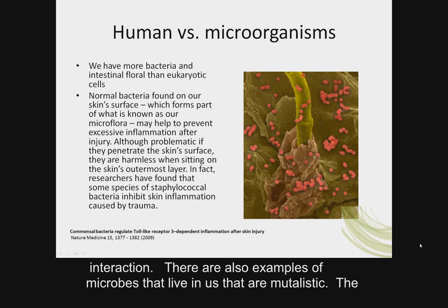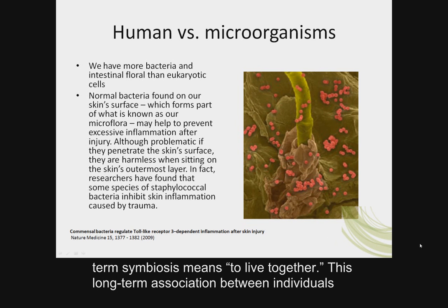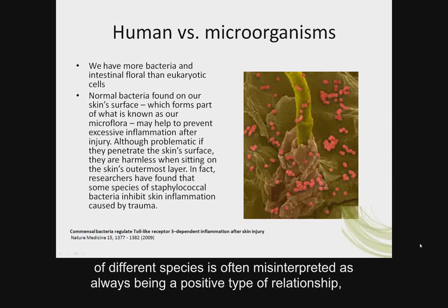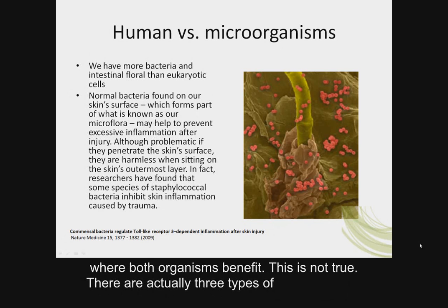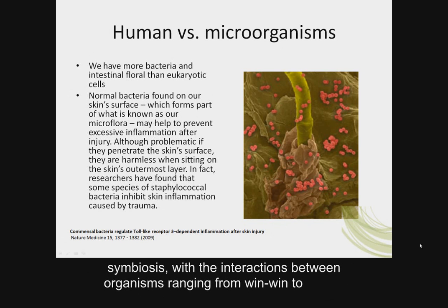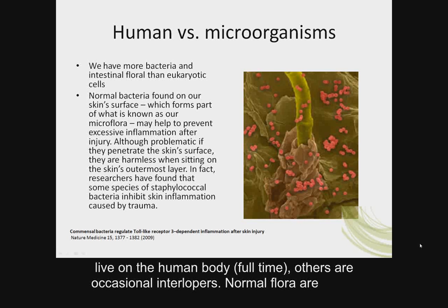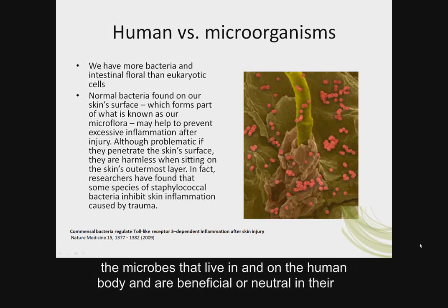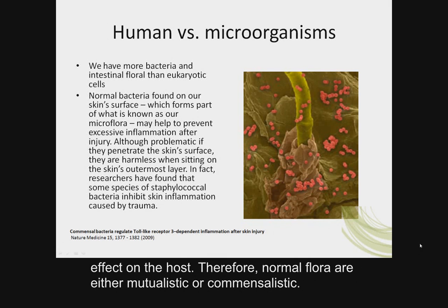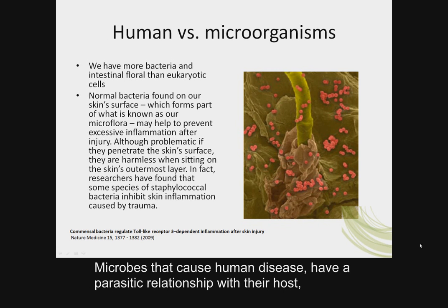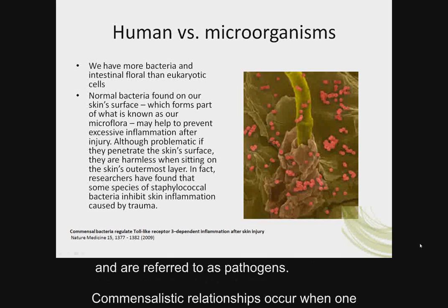The term mutualism is applied to an interaction in which the microorganism and the host both derive benefits. The term symbiosis means to live together. This long-term association between individuals of different species is often misinterpreted as always being a positive relationship where both organisms benefit. This is not true — there are actually three types of symbiosis, ranging from win-win to win-lose. Normal flora are the microbes that live in and on the human body and are beneficial or neutral, so normal flora are either mutualistic or commensalistic. Microbes that cause human disease have a parasitic relationship with their host and are referred to as pathogens.